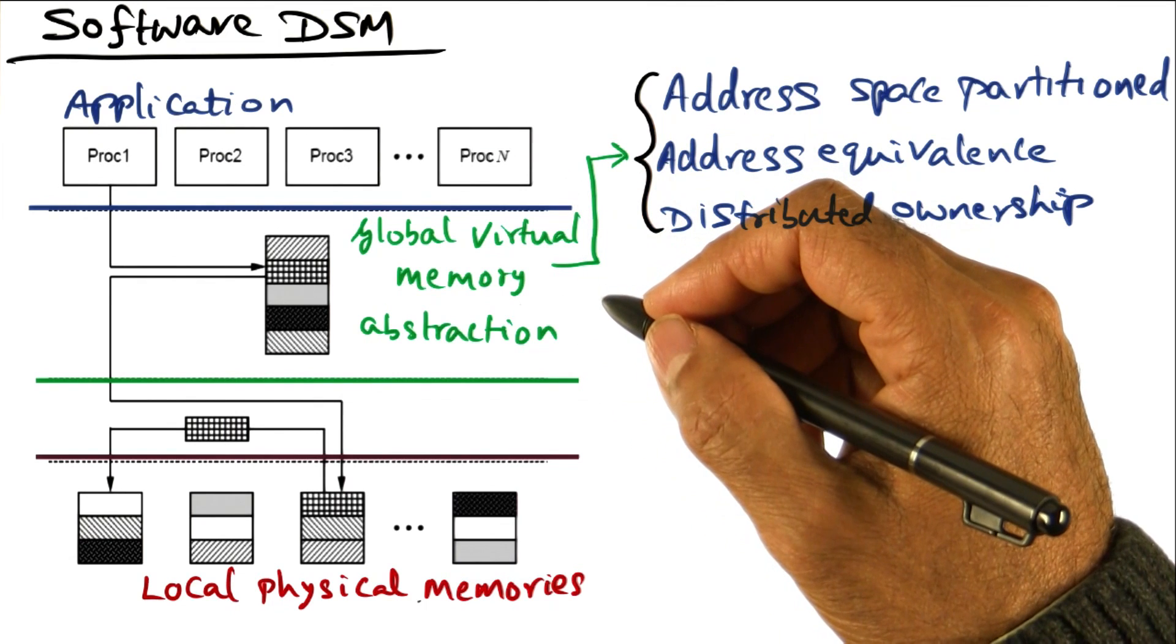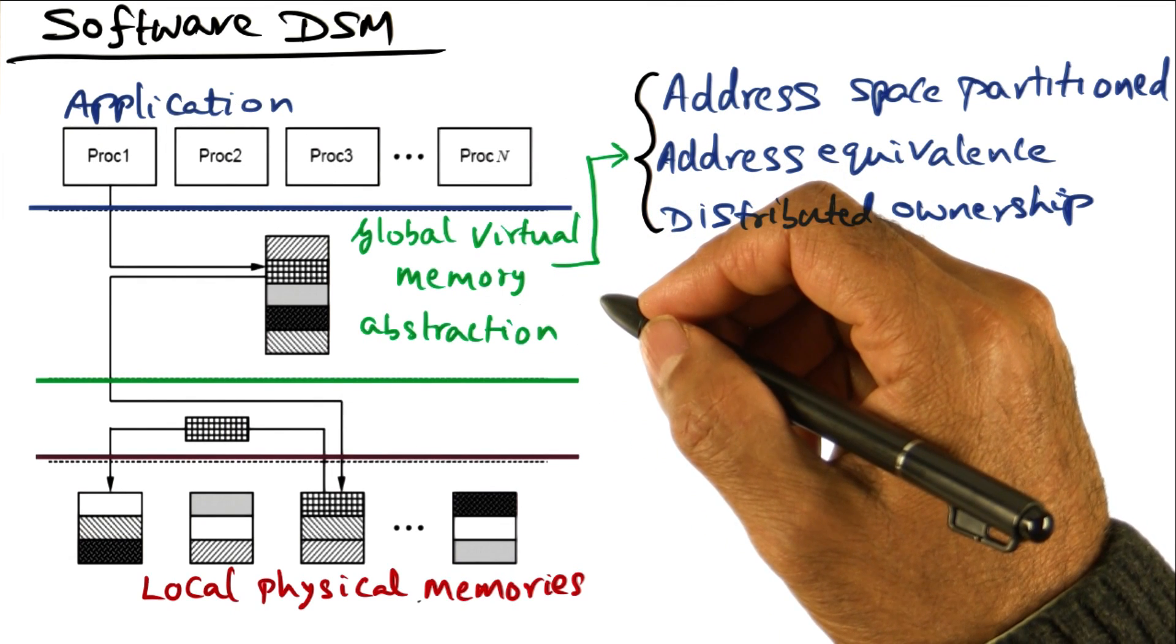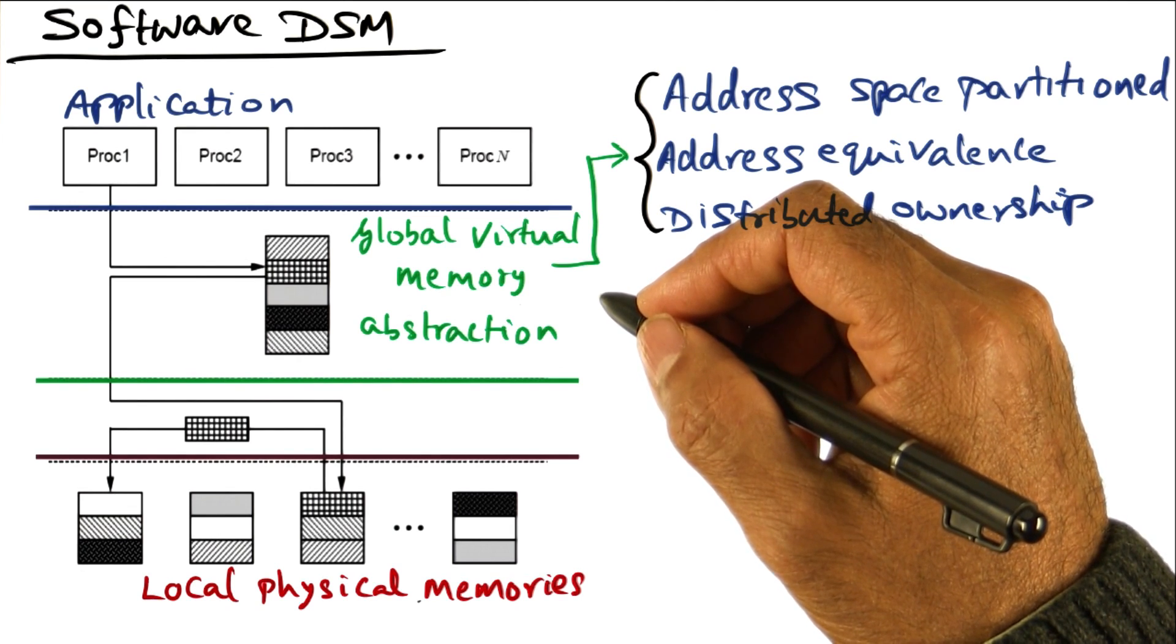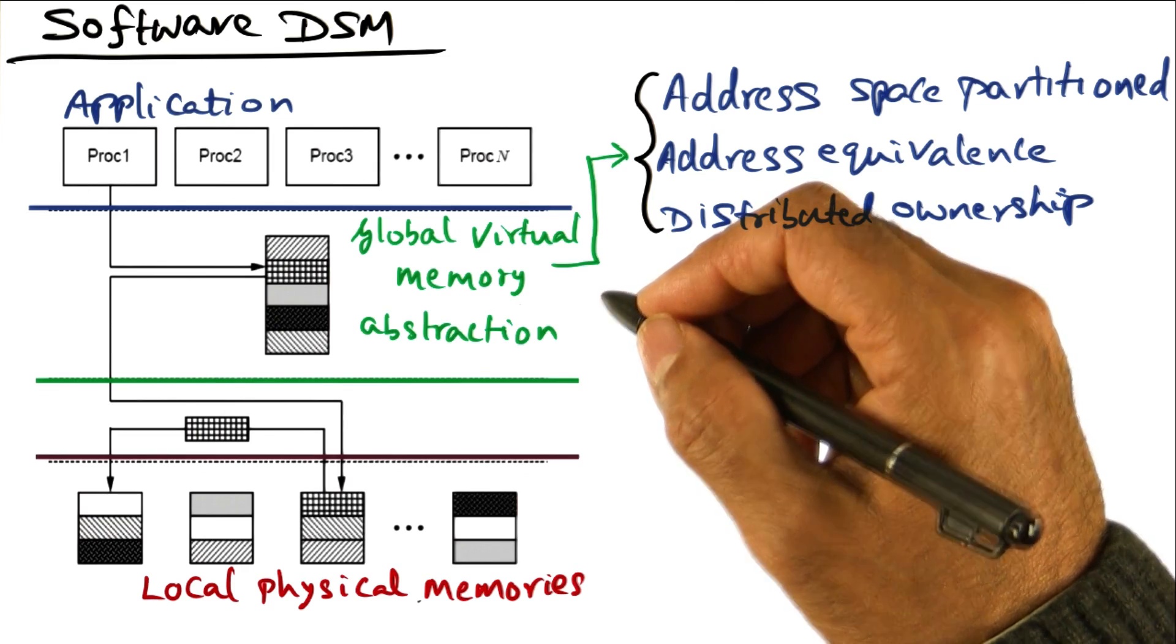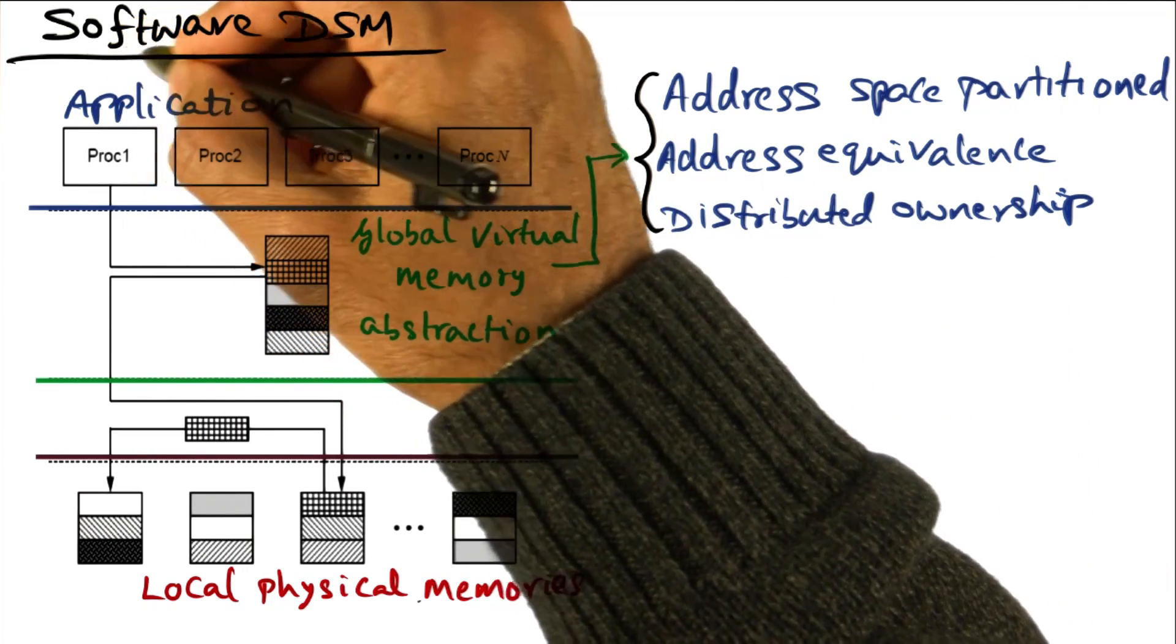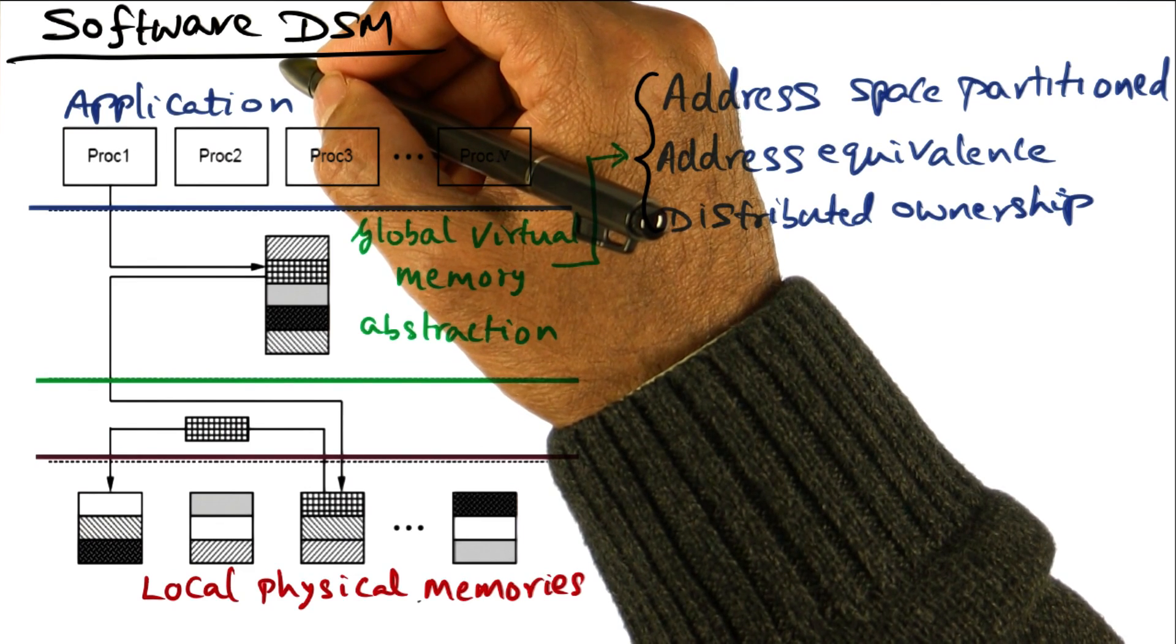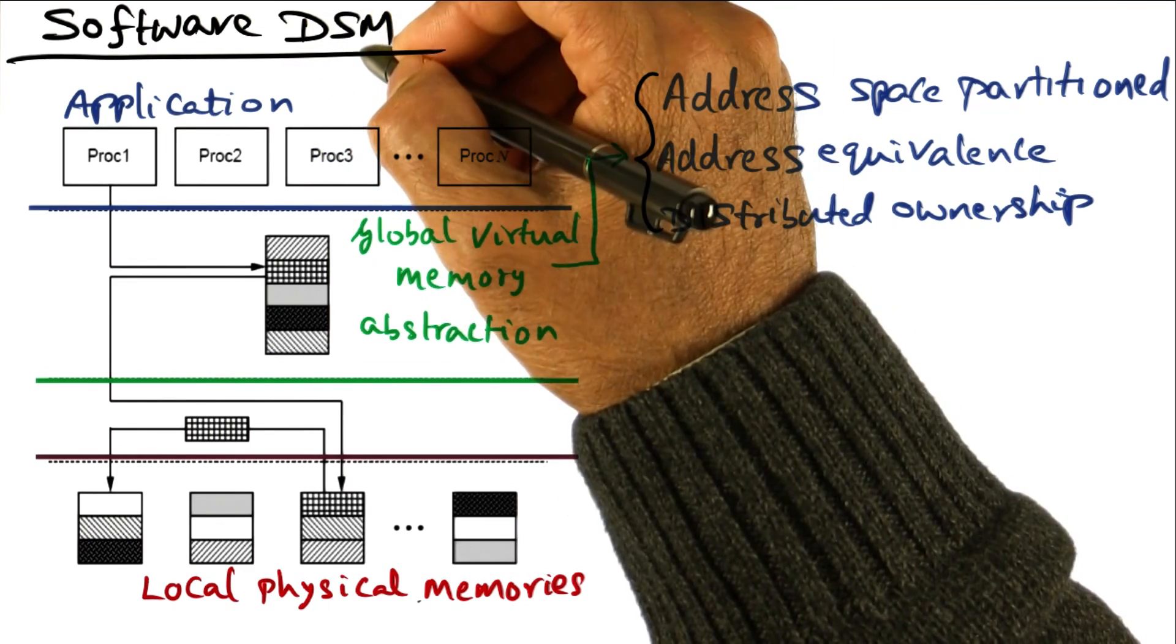So we're dealing with a computational cluster. That is, in the cluster, each node of the cluster has its own private physical memory, but there is no physically shared memory. And therefore, the system, meaning the system software, has to implement the consistency model to the programmer.